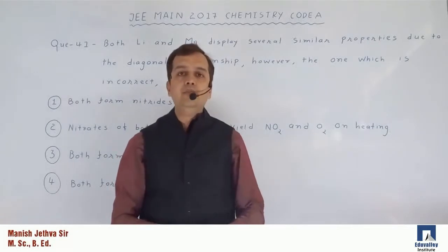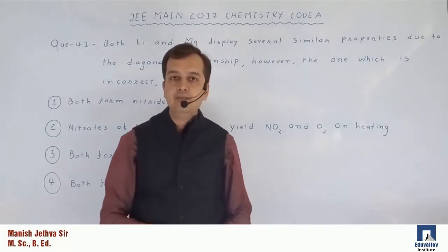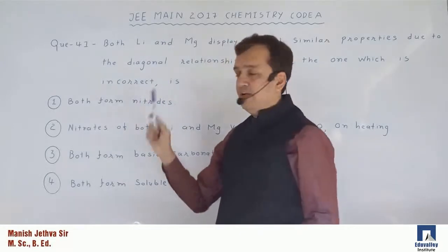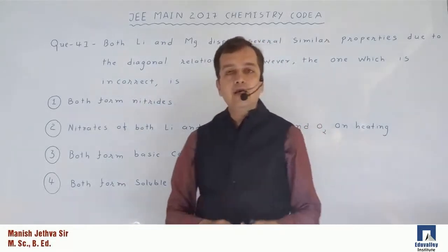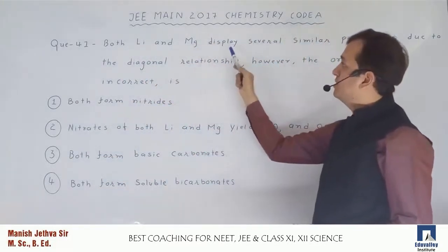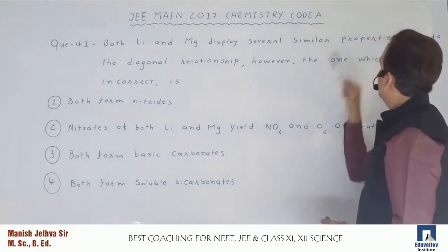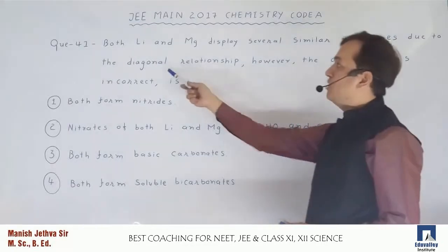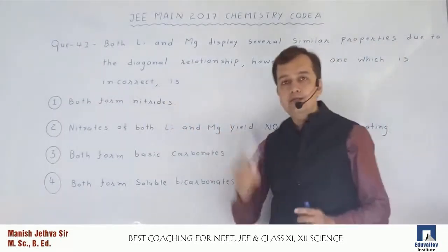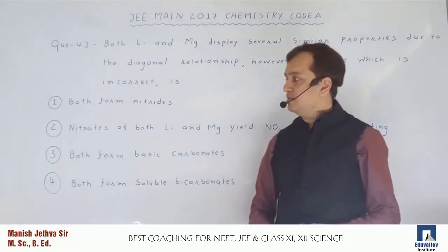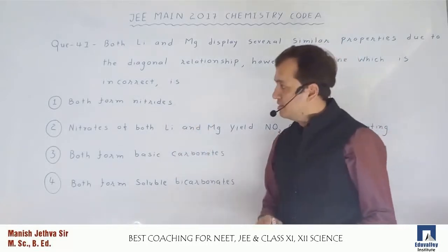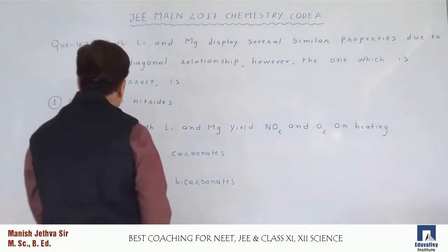Hello friends. JEE MAIN 2017 chemistry paper set A, question number 41. This question is basically of inorganic chemistry, so let us first read it. Both lithium and magnesium display several similar properties due to the diagonal relationship. However, the one which is incorrect is what? We will decide the answer by explaining each and every option.